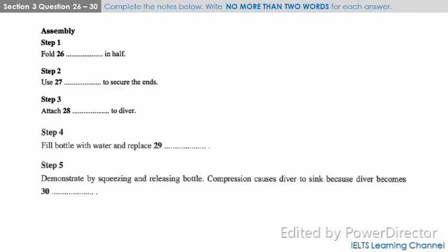What's the coat hanger for? Oh, that. If our experiment didn't work the first time and our divers stayed on the bottom, we'd have had to fish it out with a piece of wire or a hook of some kind. It's best to be prepared. That is the end of section three. You now have half a minute to check your answers.